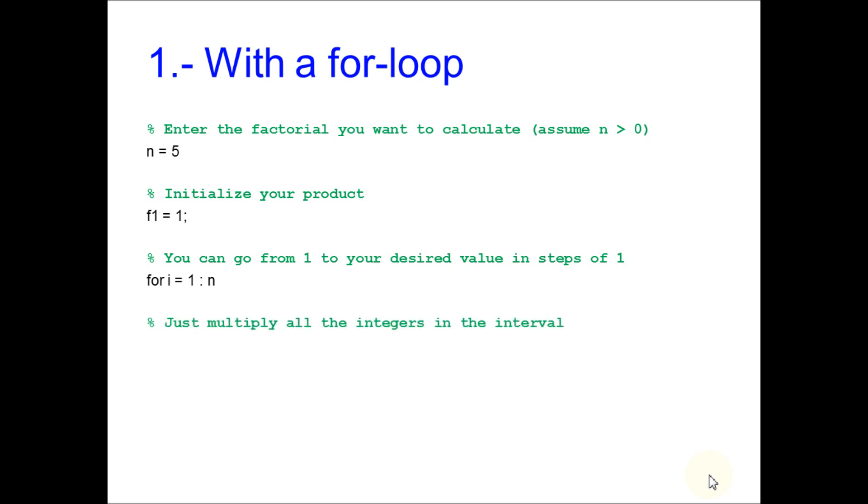Then just multiply all the integers in the interval. You keep the values in the same variable in F1. You end your iteration and you display your result if you wish.